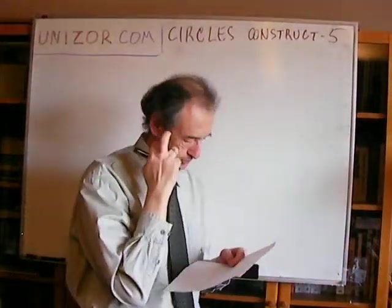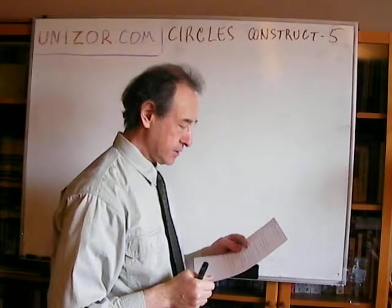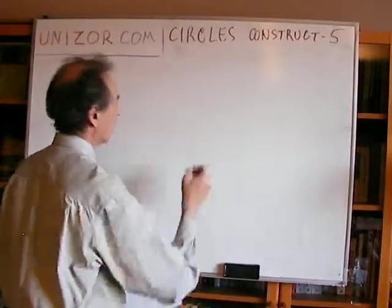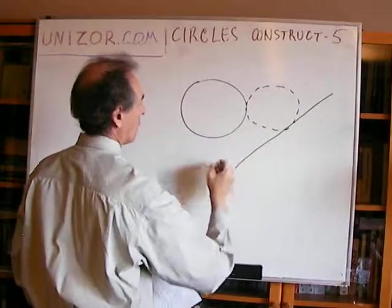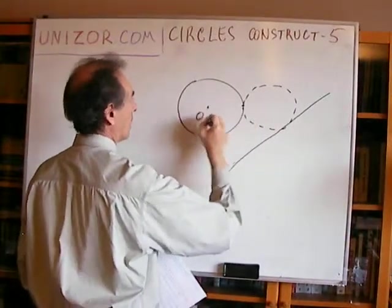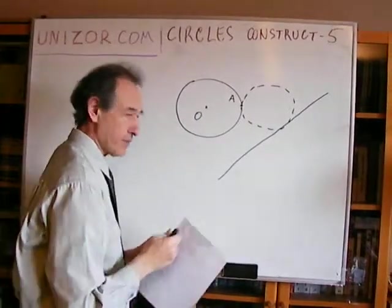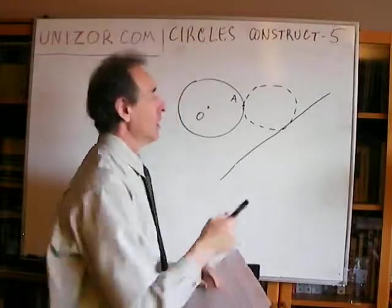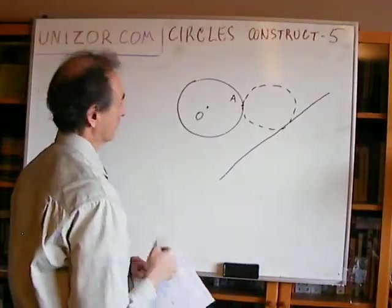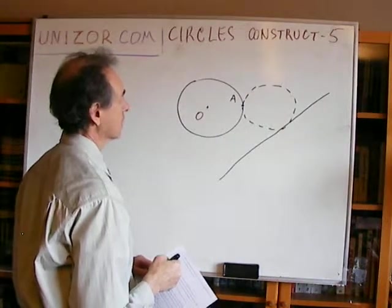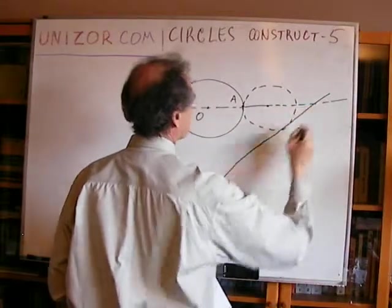Once OM and ON are determined, we draw a line parallel to each leg of the angle at the respective distance. The intersection of these two parallel lines gives the center. Next problem: construct a circle tangential to a given circle at a given point and tangential to a given straight line.